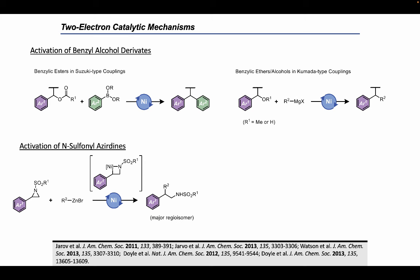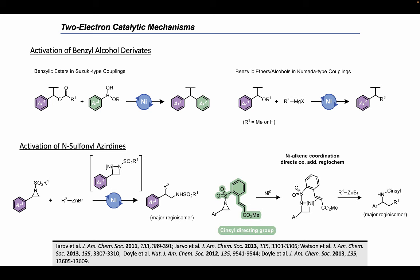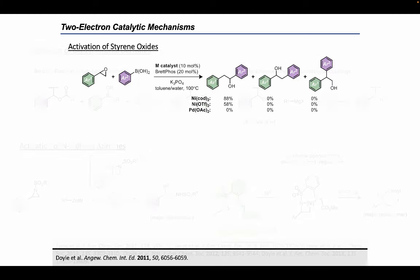Tosyl and mesyl-protected aziridines produce the beta-aryl sulfonamide product. However, this regiochemistry can be flipped when using the so-called Sinsel directing group, which contains a conjugated alkene that coordinates to the nickel catalyst and directs the regioselectivity in the oxidative addition step. Epoxides have also been shown to undergo oxidative addition under nickel catalysis. The Doyle group developed a highly regioselective Suzuki coupling of styrene oxides with arylboronic acids, and nickel catalysis was uniquely effective for activating these epoxides as no reaction was observed with palladium salts.